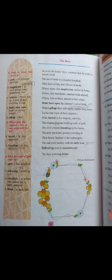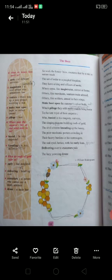Others like merchants venture trade abroad, others like soldiers armed in stings. Here the poet gives a vivid description of the bees kingdom and how they operate in a communal way. They have a king and officers of sorts. They also have to maintain discipline in order to run their life.